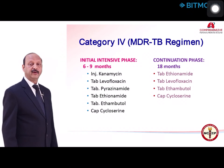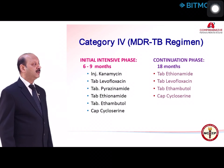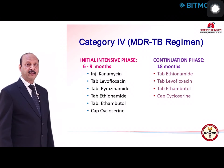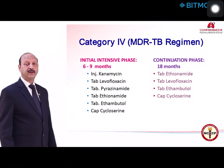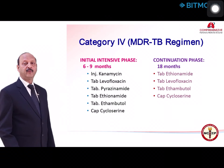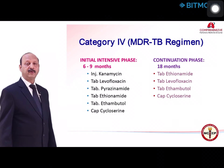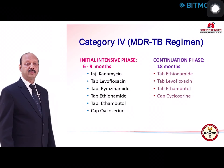The continuation phase is given for 18 months and includes ethionamide, levofloxacin, ethambutol, and cycloserine. If kanamycin resistance is documented in the laboratory, it can be replaced by capreomycin depending on sensitivity. If levofloxacin is resistant, it can be replaced by drugs like moxifloxacin, linezolid, or clofazimine.